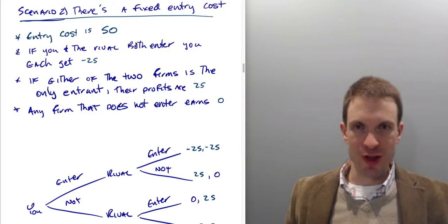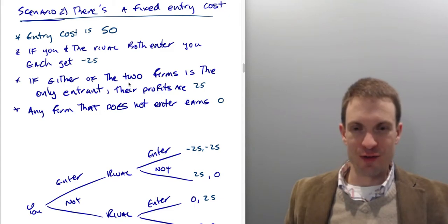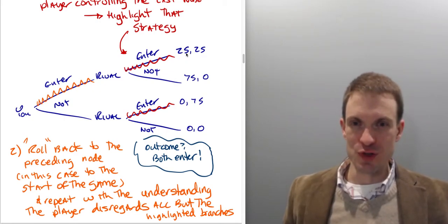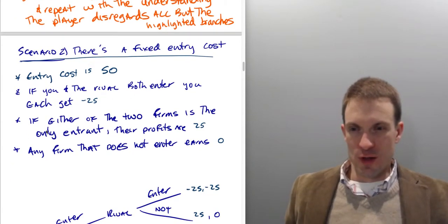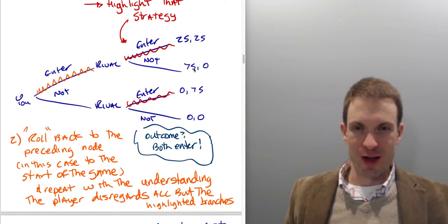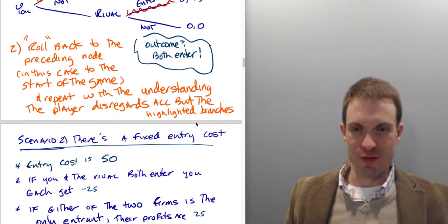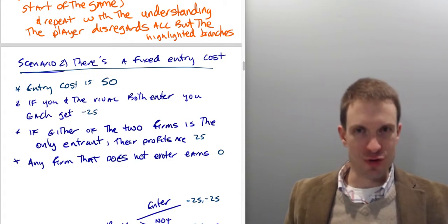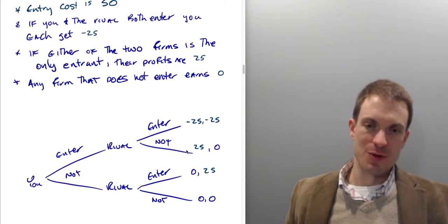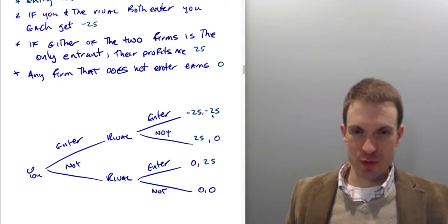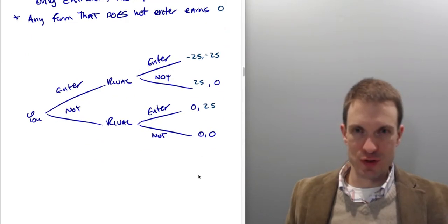Scenario two, suppose we have a fixed entry cost. A fixed cost of $50,000. If you and the rival both enter, you each get negative $25,000. Previously your payoffs were $25,000 minus the fixed cost of $50,000 leaves you with negative $25,000 each. If either of the two firms is the only entrant, their profits are $25,000. Previously the profits would have been $75,000 minus $50,000, the fixed cost of entry, gives us $25,000. And if you don't enter, you get $0 and you don't incur the $50,000 because this is an entry cost.